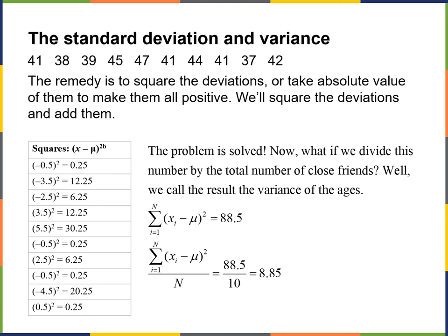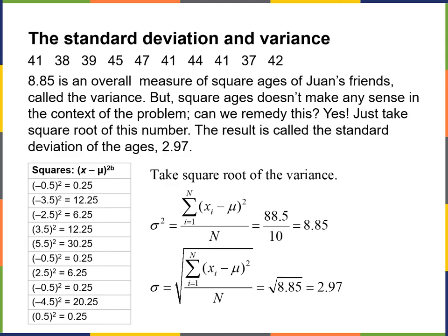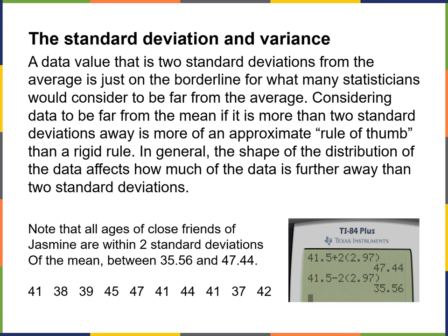The calculation in our case isn't nearly as important as interpreting what it means to have that sort of standard deviation and variance. So 8.85 is an overall measure of squared ages of Juan's friends, called the variance. But squared ages doesn't make sense in context, so we take the square root of that number — the result is the standard deviation. Our variance is 8.85, and the square root is approximately 2.97, meaning our standard deviation is about three years difference between friends.